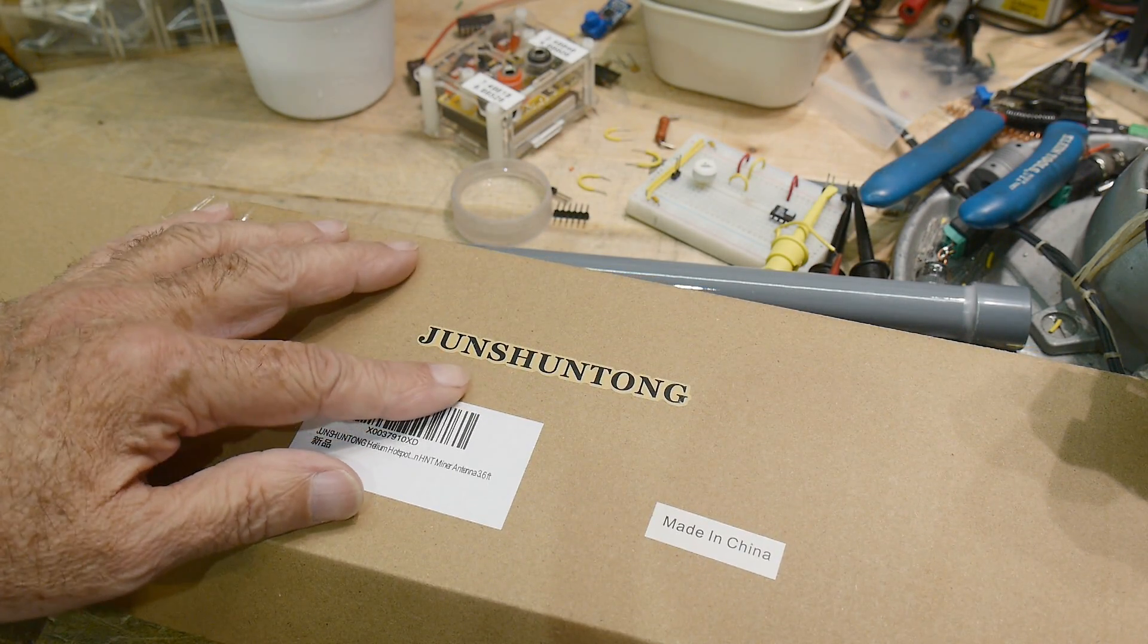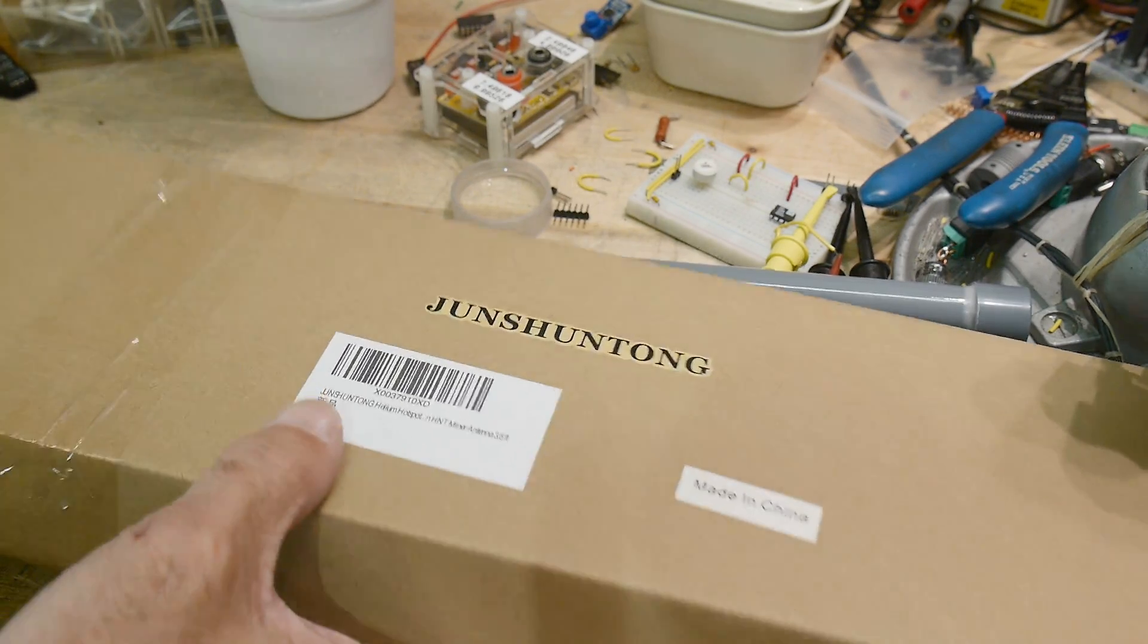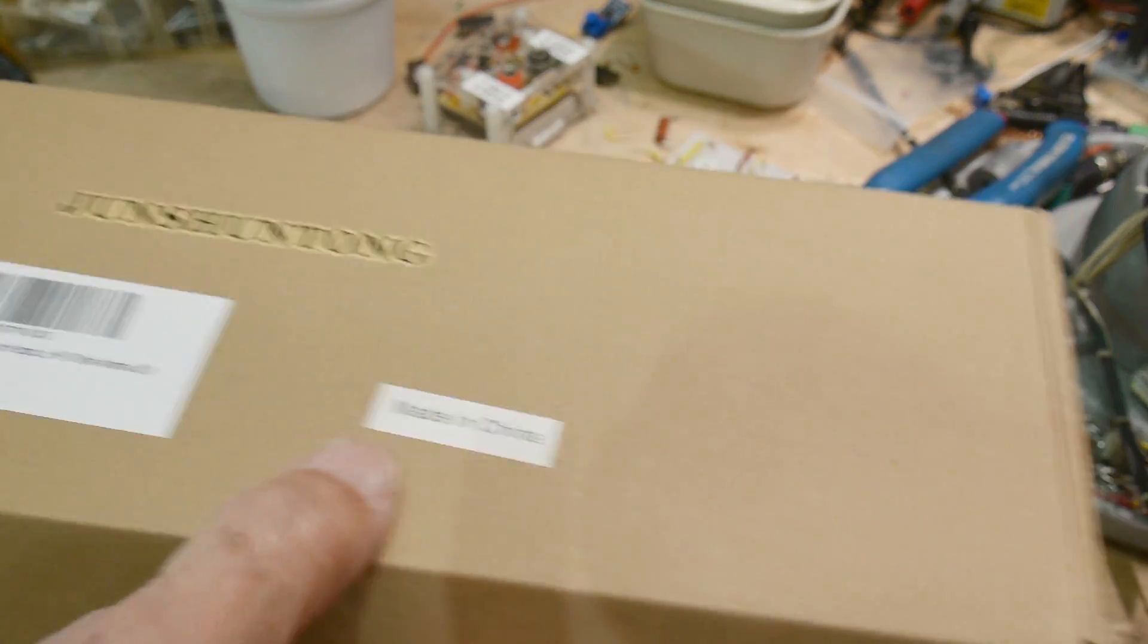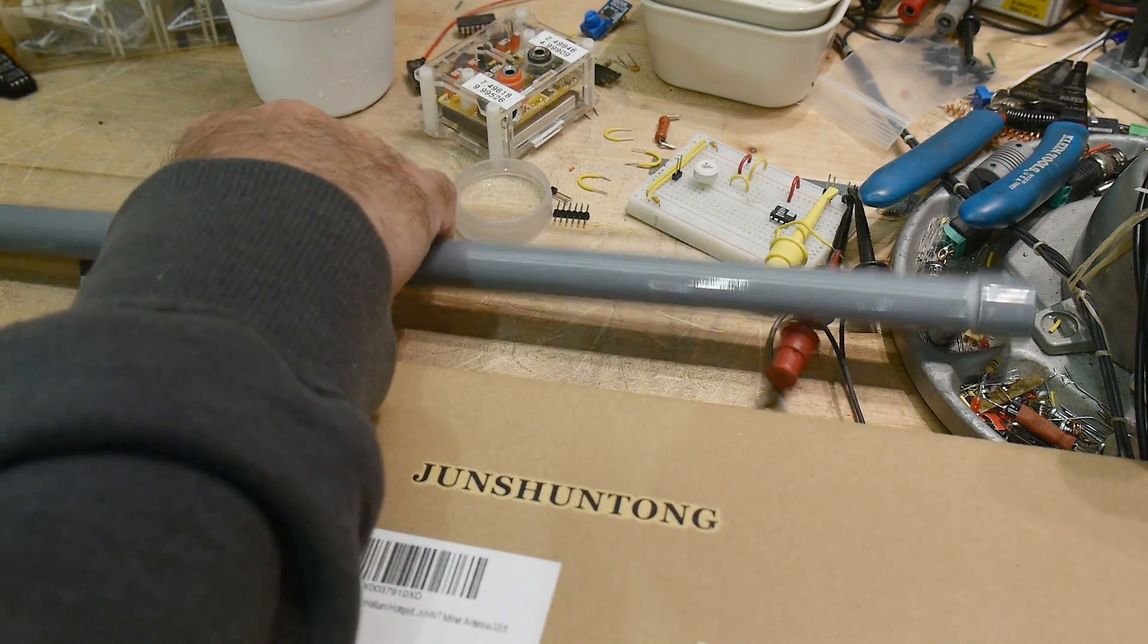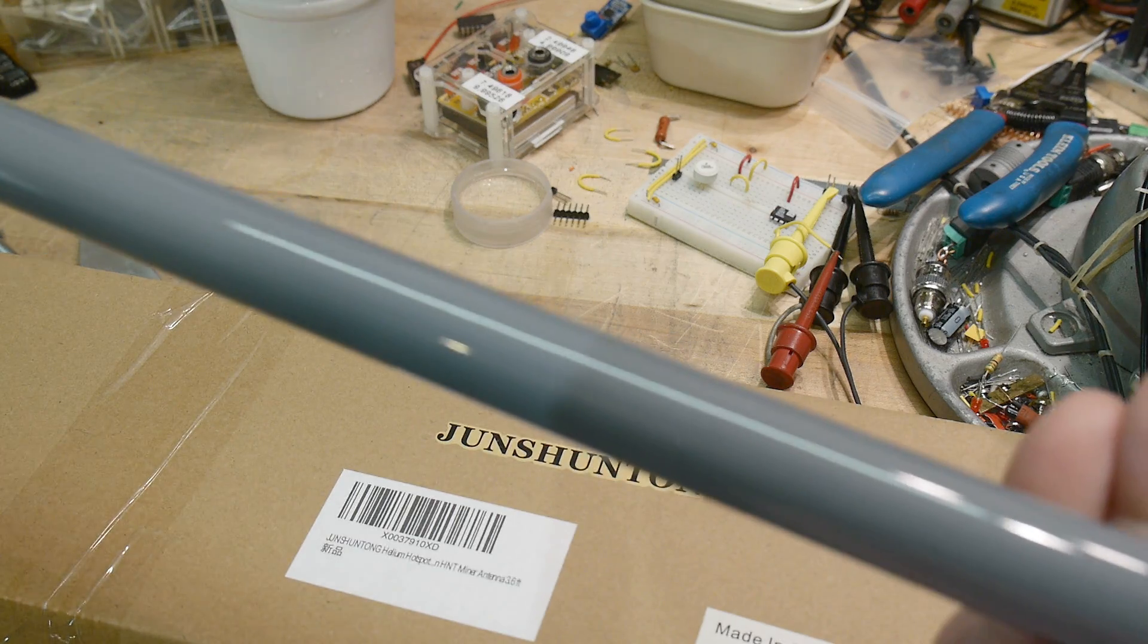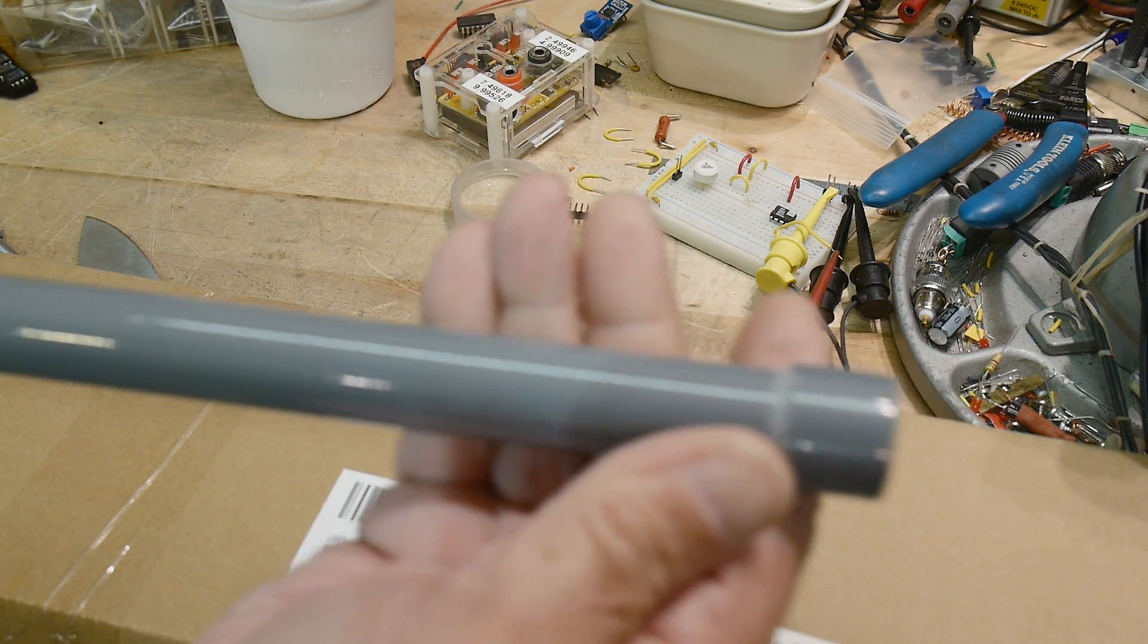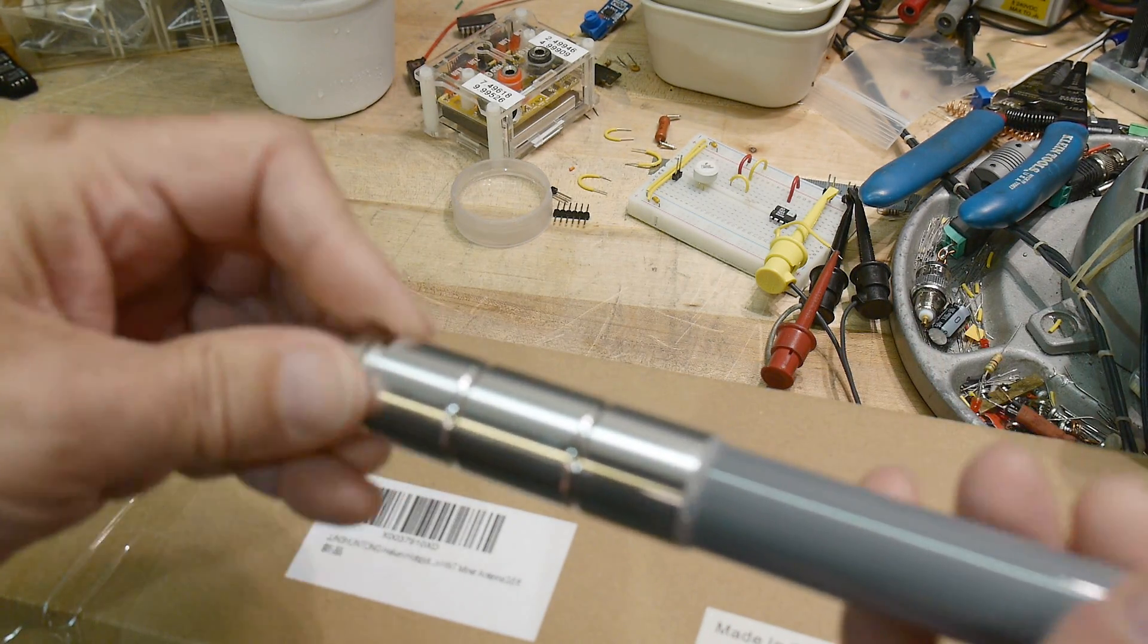Alright, another review. This was sent in by Jensen Tong and it's a real long box. I've already taken it out - it is an antenna, just one long antenna for the 900 meter band.